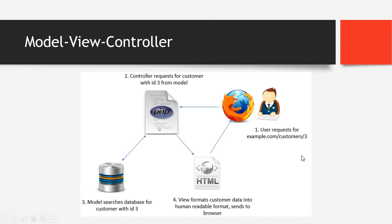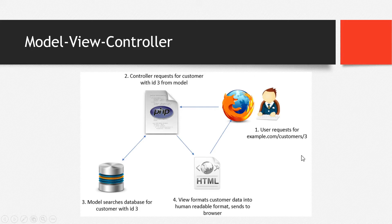From the controller, it will try to communicate with the model. The model searches the database for the customer with ID 3. Whether or not it finds the record, the model returns data back to the controller. The controller then passes that data to the view. The view formats the customer data into a human-readable format and sends it to the browser for display.